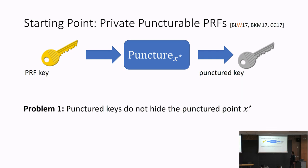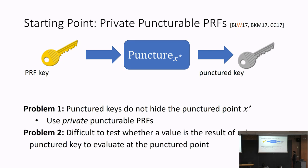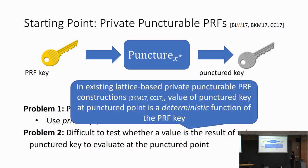The first problem — the punctured key not hiding the puncture point — is fairly easy to resolve by using a more recent notion called a private puncturable PRF, where, as the name suggests, the punctured key also hides the punctured point. The second problem is more challenging: it's difficult to test whether a particular value occurs when using the punctured key to evaluate at the punctured point, and existing constructions yield a value that is a deterministic function of the key itself, giving us no flexibility.